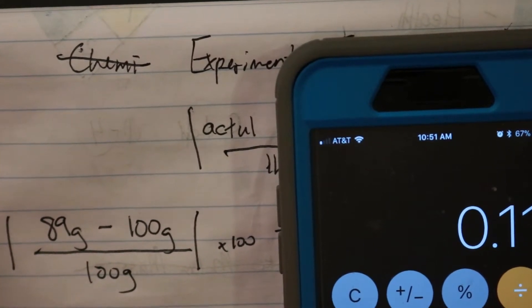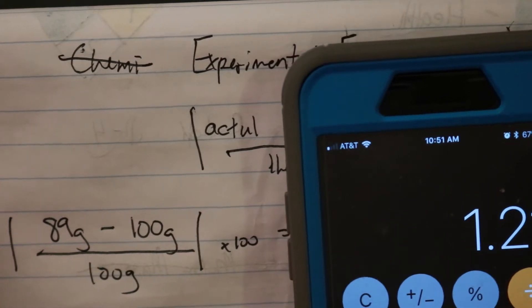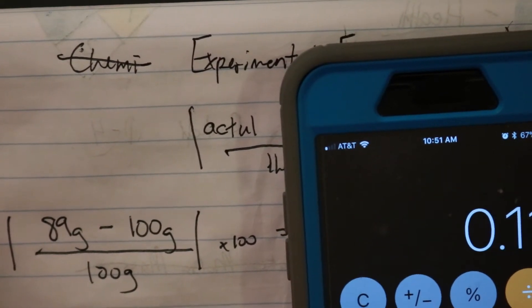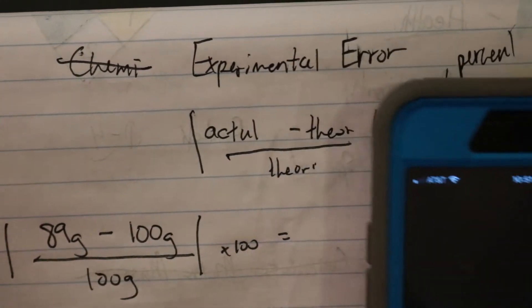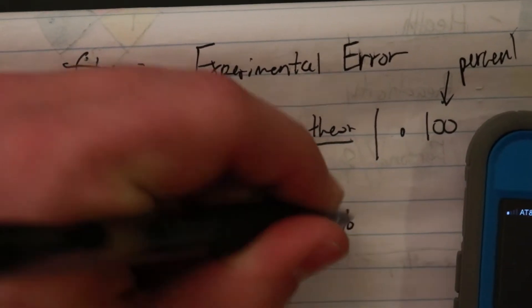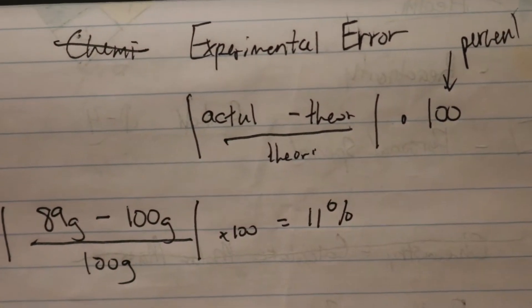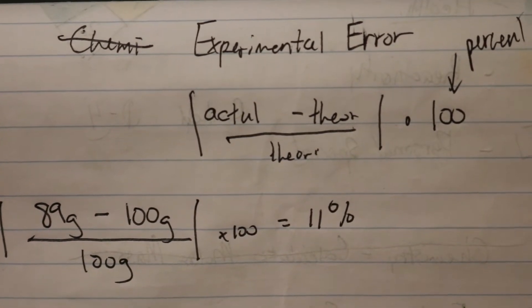0.11 times 100, and that's going to give me 11. So 11% would be my experimental error. So that's just how to do it.